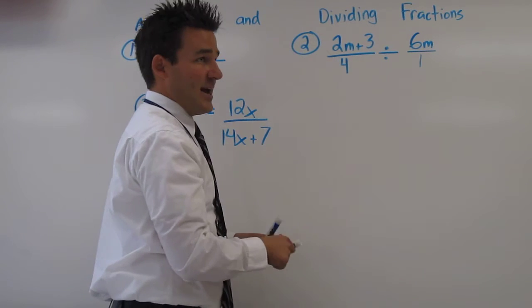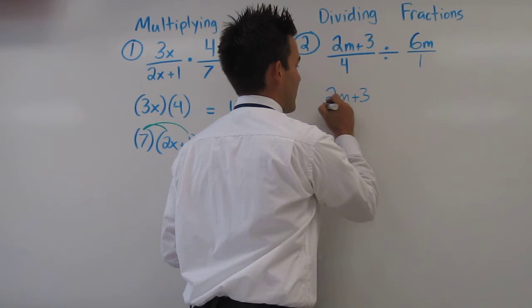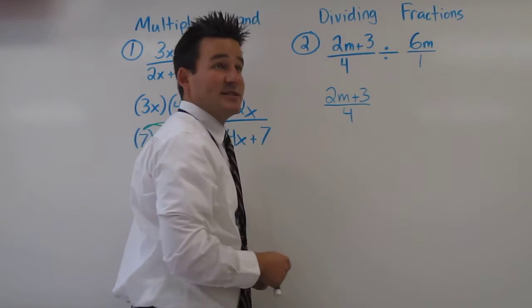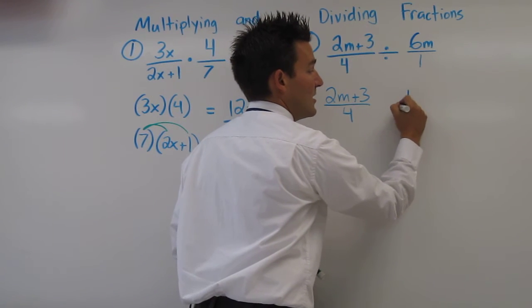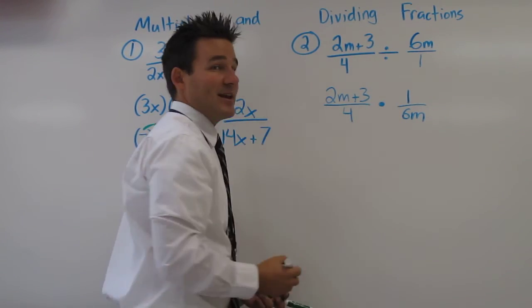We keep the first fraction as it is, and we find the reciprocal of the second fraction, 6m over 1. Well, if I flip that upside down, I'm going to have 1 over 6m. Once we've done that, we can simply find the product.